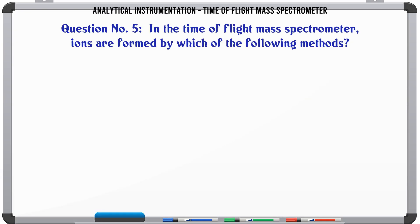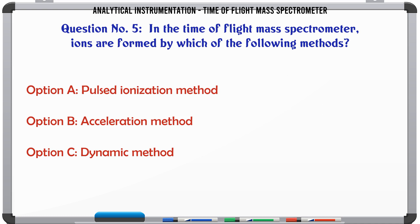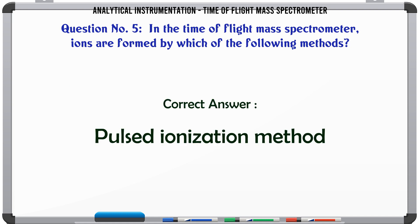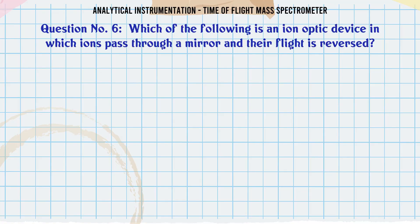In the time-of-flight mass spectrometer, ions are formed by which of the following methods? A: Pulsed ionization method. B: Acceleration method. C: Dynamic method. D: Ion excitation method. The correct answer is A: Pulsed ionization method.